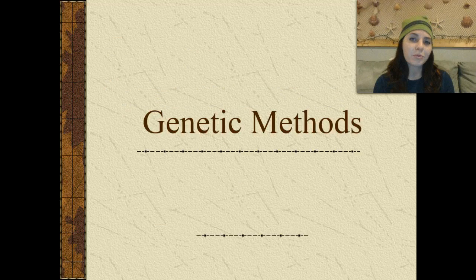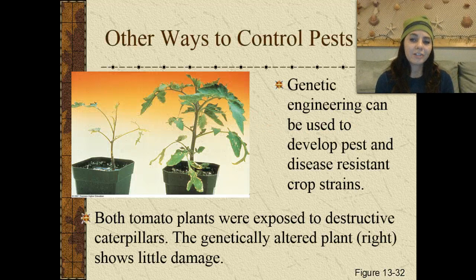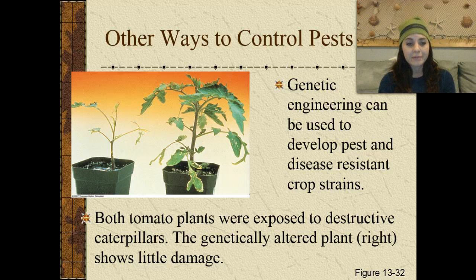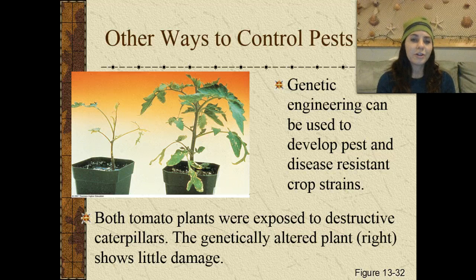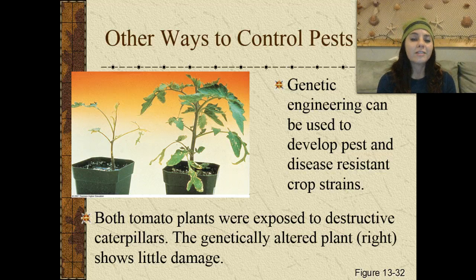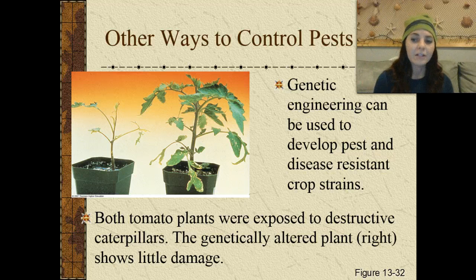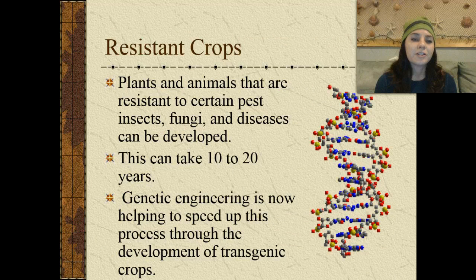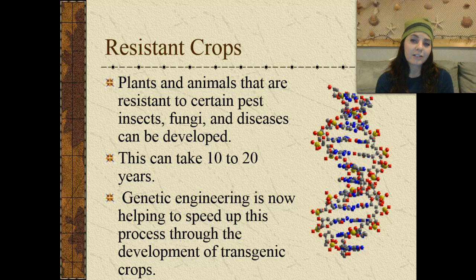We also employ the use of genetic methods. Genetic engineering can be used to develop pest- and disease-resistant crop strains. Both tomato plants seen in this picture right here were exposed to a destructive caterpillar. The genetically altered plant on the right doesn't show very much damage because it had genetic engineering which predisposed it to being resistant to those caterpillars. Plants and animals that are resistant to certain pests, insects, fungi, as well as diseases can be developed.